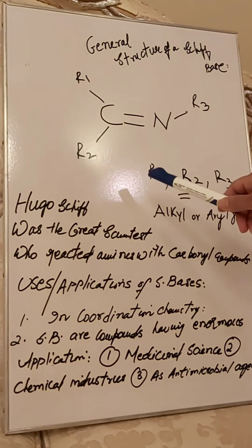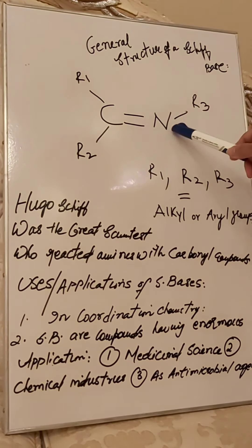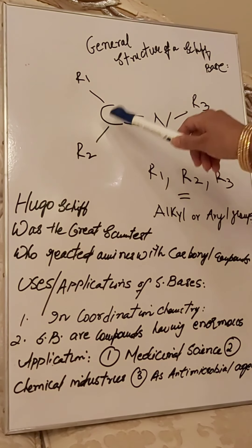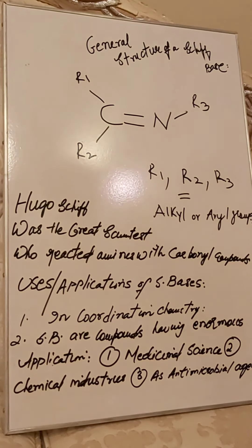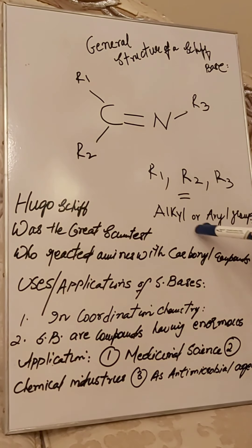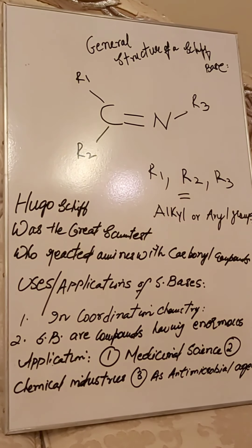This is the general structure of a Schiff base. Carbon is doubly bonded to nitrogen — C=N — and there are three groups: R1, R2, and R3. These R groups can be alkyl or aryl groups. Please go through what alkyl and aryl groups are, as this is very basic chemistry.